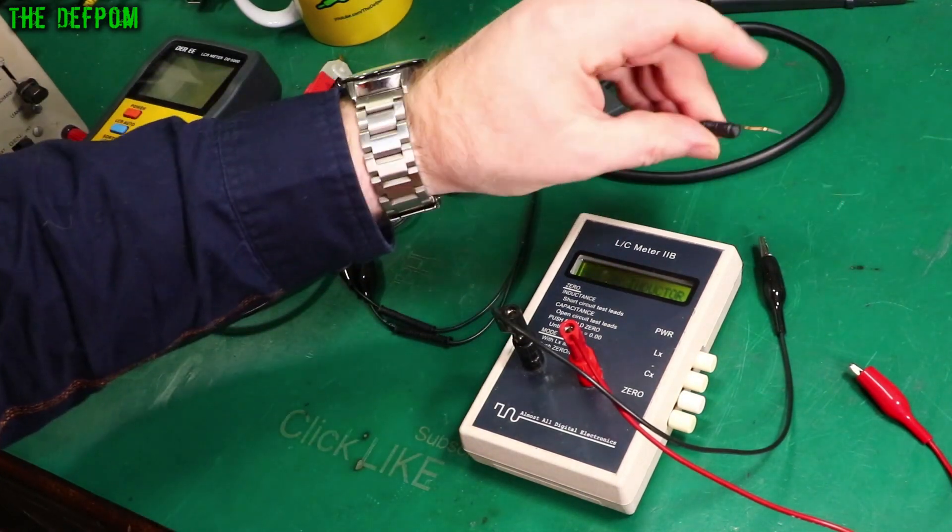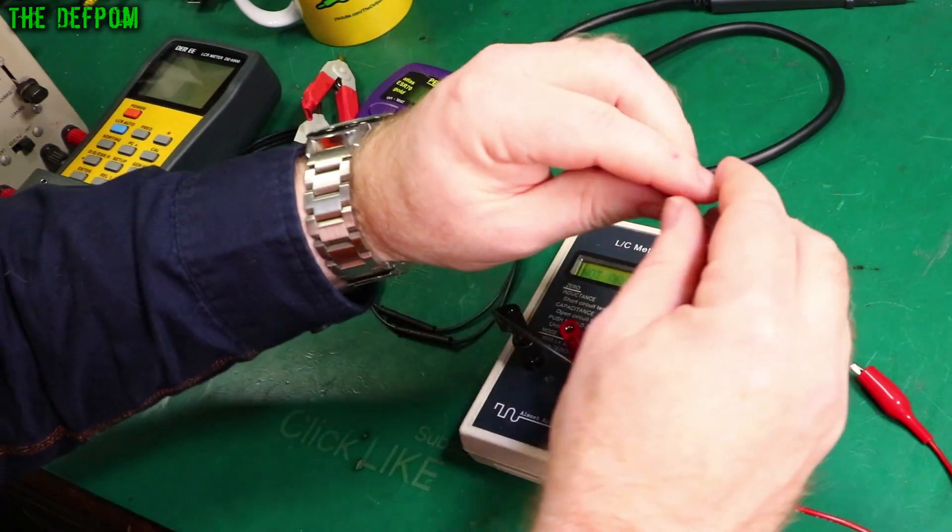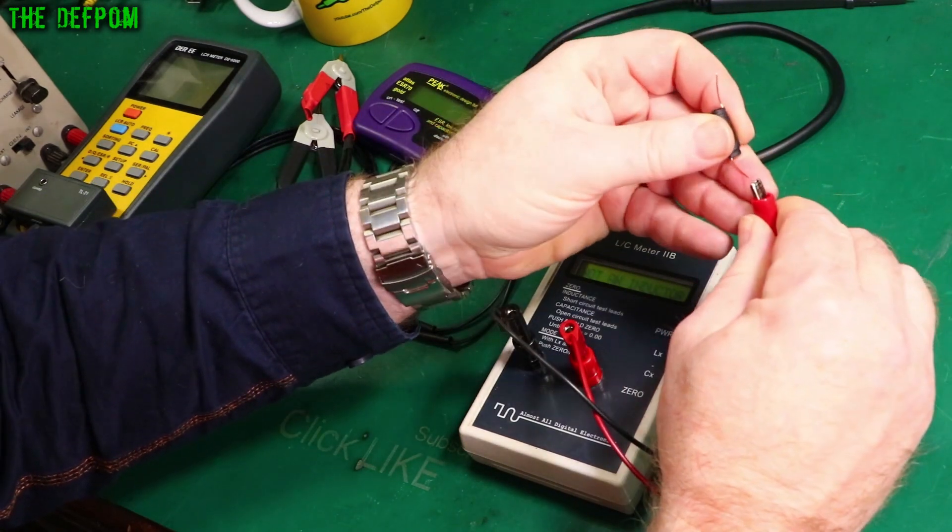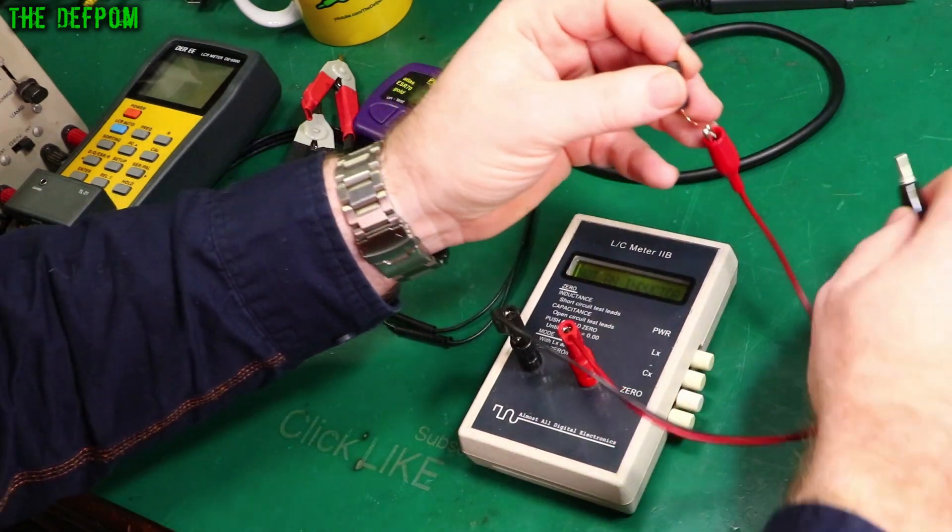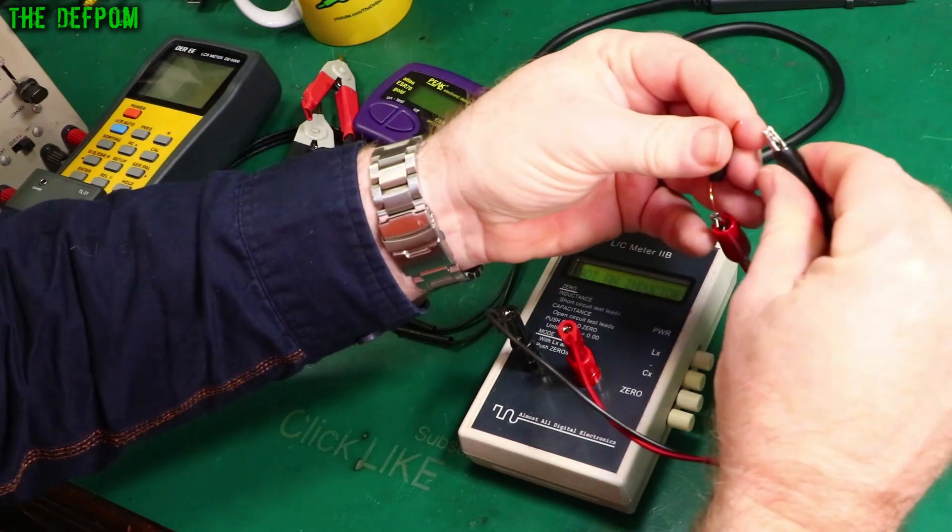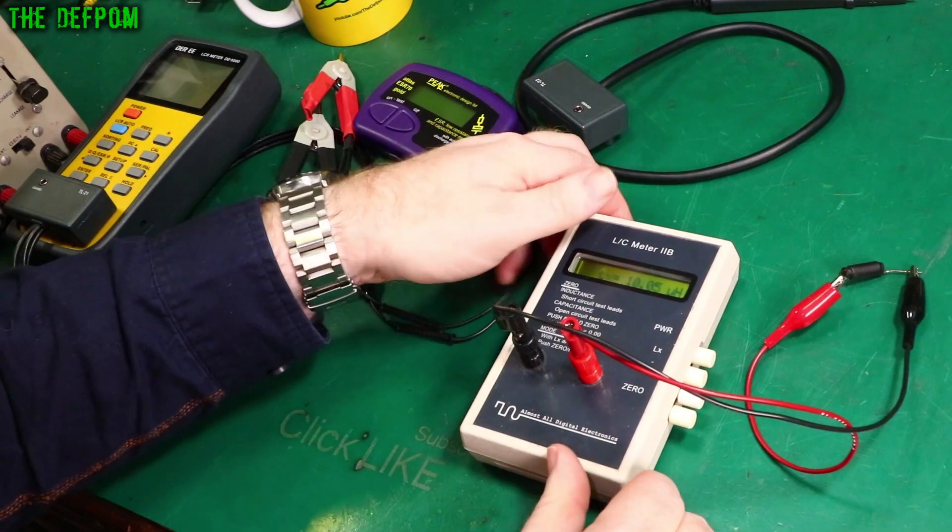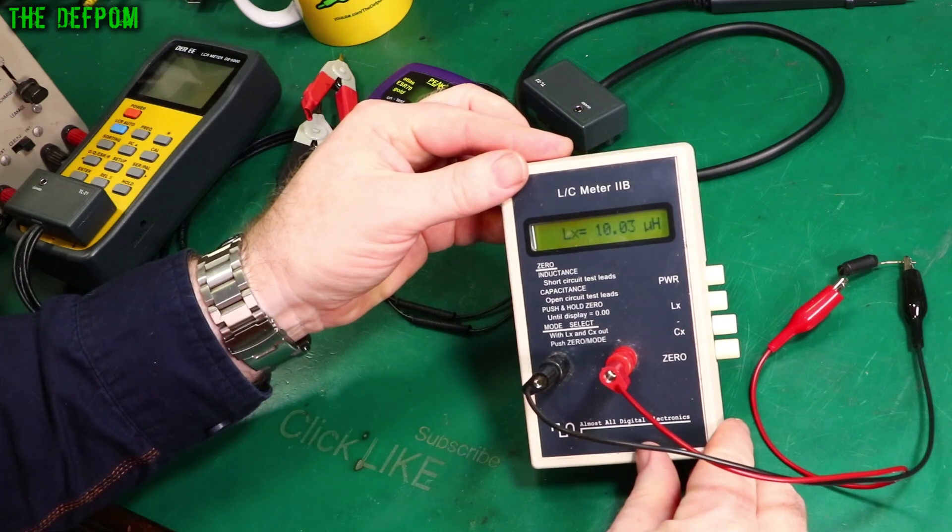Right, so I just grabbed an inductor. I don't actually know what this one is. This is some kind of DC filtering inductor. I don't know what this thing would measure. I have no idea. Let's find out. 10 microhenry. That works fine.